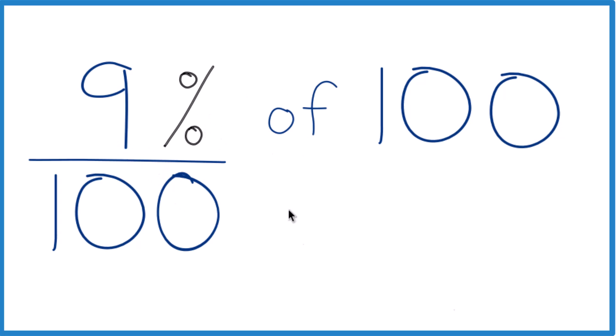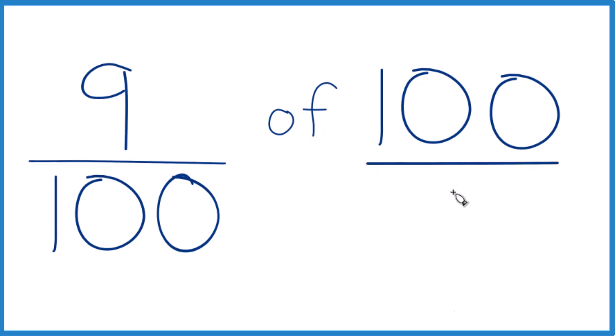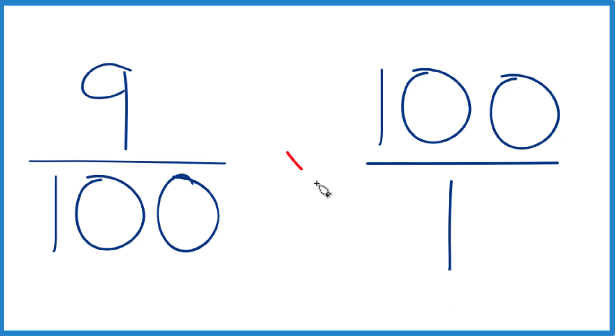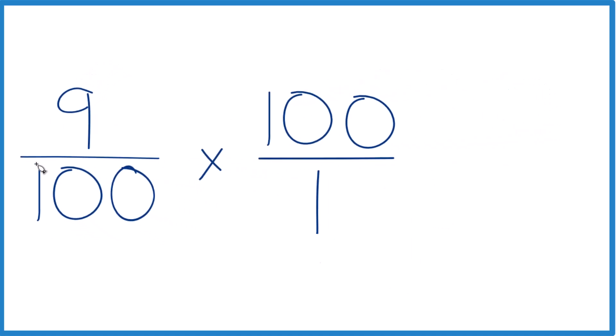The other way you could do this is take the 9 over 100, and then instead of 100 here, we're going to call this 100 over 1, and we're just going to multiply. So we're going to multiply 9 over 100 times our 100 here, and 100 over 1, it's still 100. We haven't changed anything. Just everything lines up.